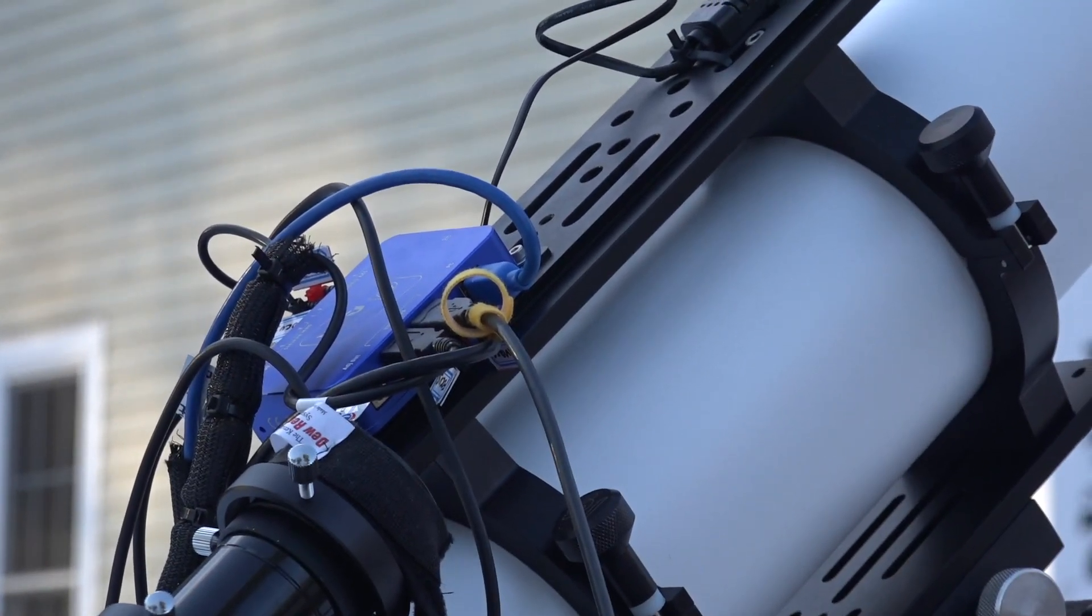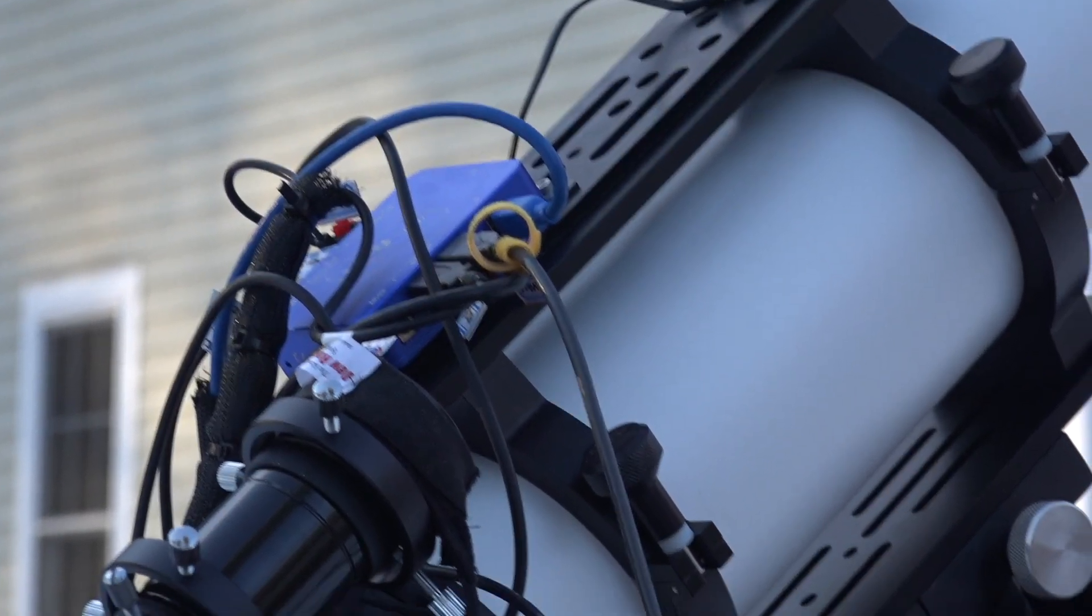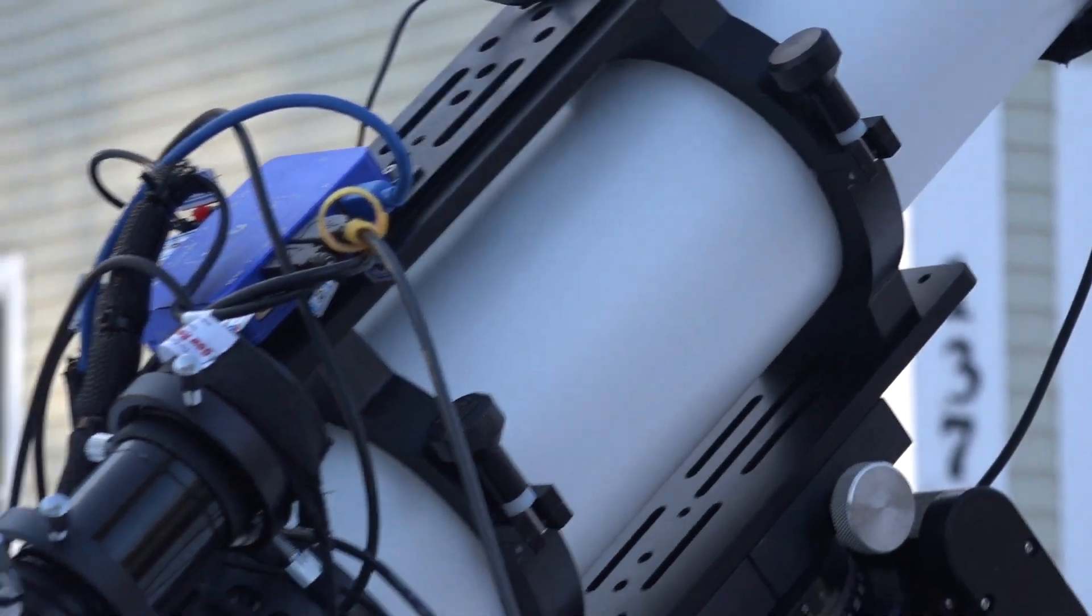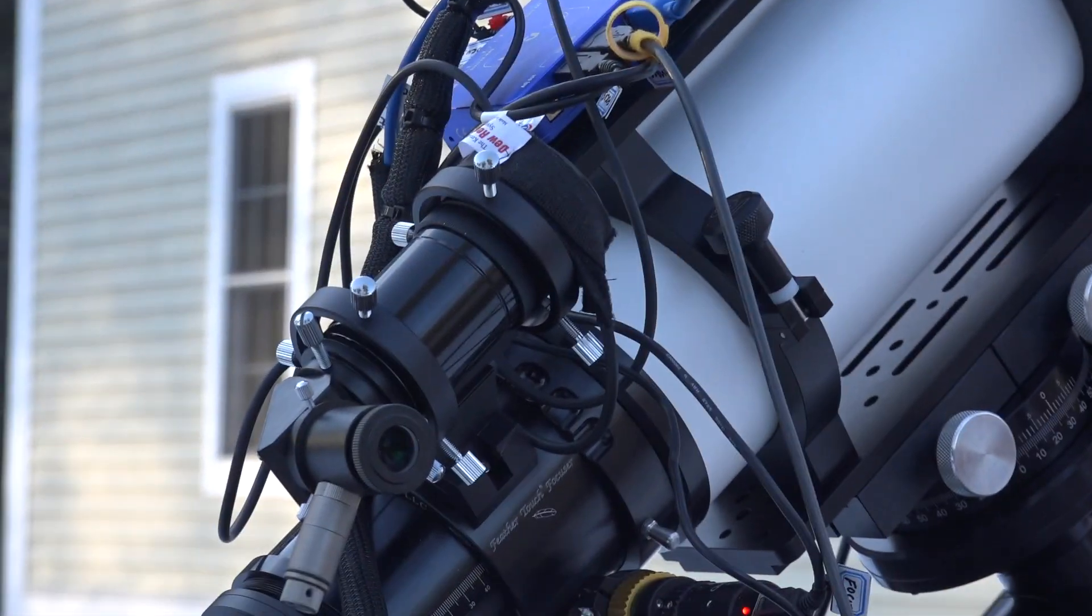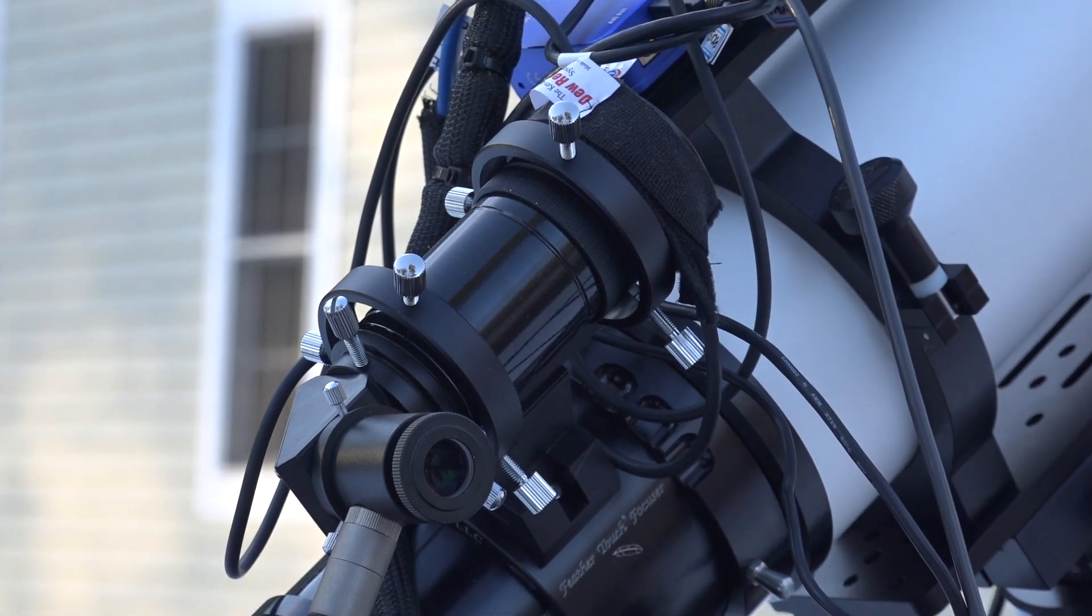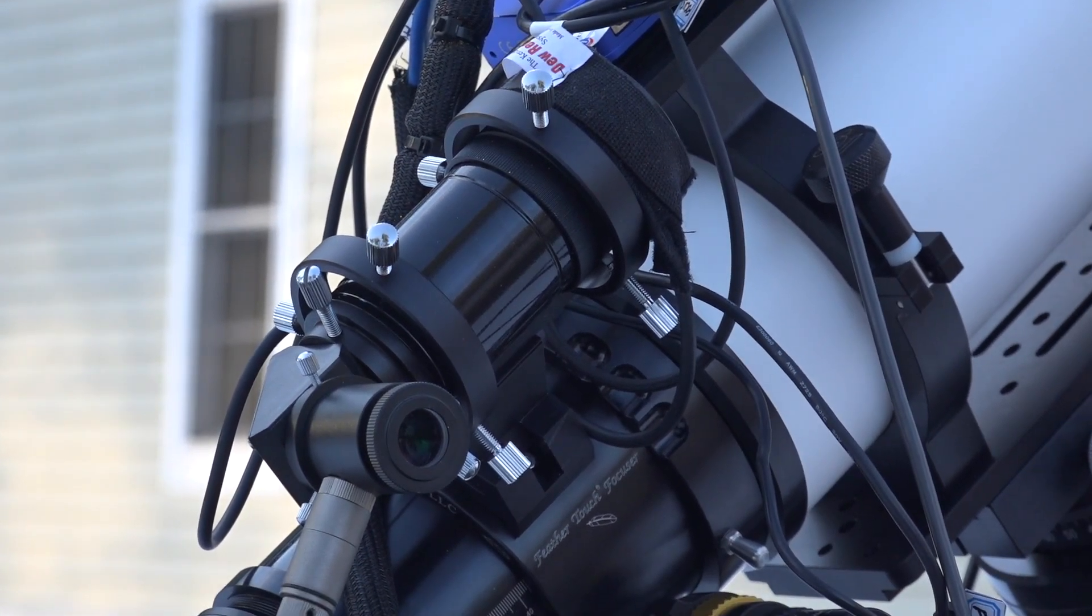If we keep moving down the telescope, you can see here is my finder scope, which I had taken off my old telescope with a lit reticle so I can actually aim the telescope at night.